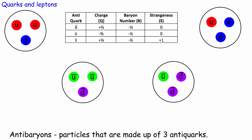Every particle has a corresponding antiparticle, and that's exactly the same for quarks. Where we had a down, up, and strange quark we also get an anti-down, an anti-up, and an anti-strange quark. The symbols are the same D, U, and S but with a bar over them, and everything is opposite. The charge on a down quark was minus one third, so the charge on an anti-down quark is plus one third. The baryon number of all quarks was plus one third, so for antiquarks the baryon number is minus one third. Strangeness is also opposite: anti-strange has strangeness of plus one.